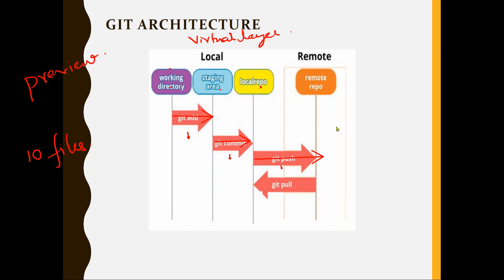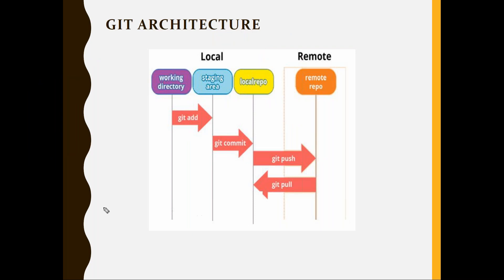This is called the Git tree or Git architecture — three steps before your changes go to remote: working directory → staging area → local repository → remote. You cannot skip steps. Once you move to local, if you want to share with others or publish it in the project, you push to remote. Until you push to remote, no one else can see your changes — they are confined only to yourself.